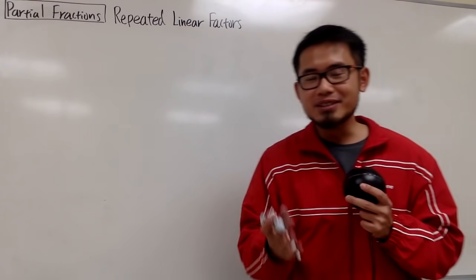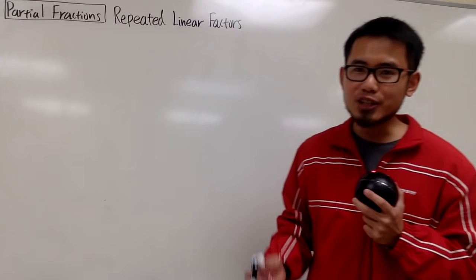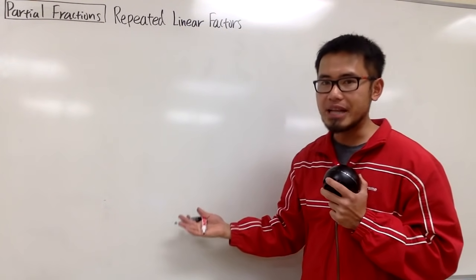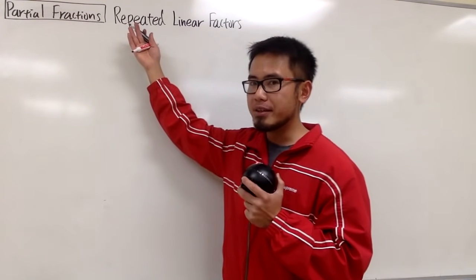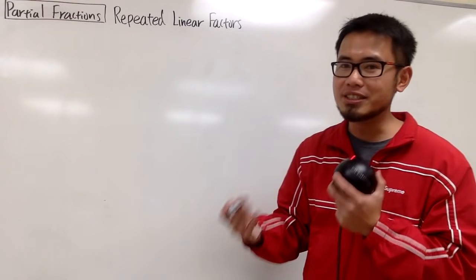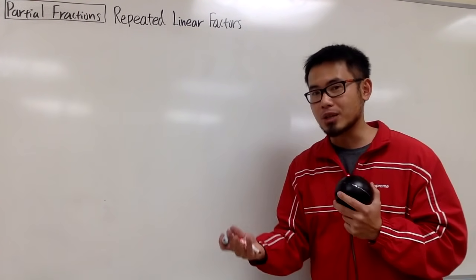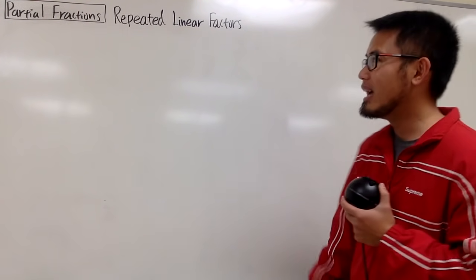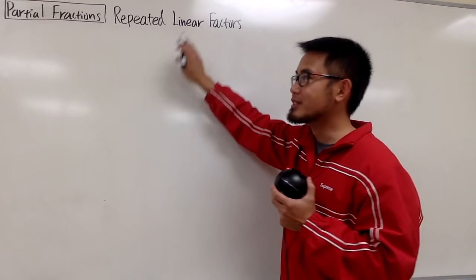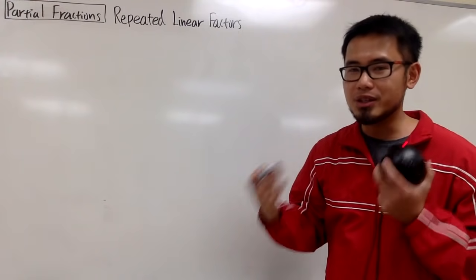In this video, I'm going to answer the most asked question in partial fractions, and that's the situation when we have factors in the denominator that are being repeated. In those situations, how exactly should we set up the partial fraction form? Why do we have to build up the power? I will first look at the linear case — repeated linear factors — and how we can deal with them.